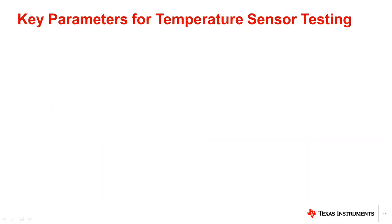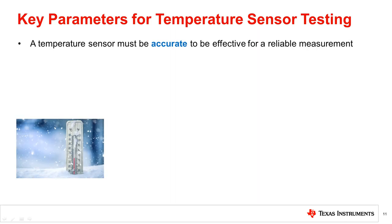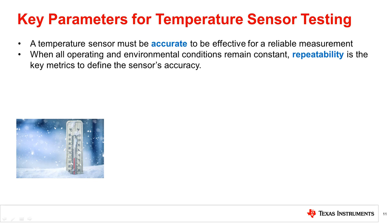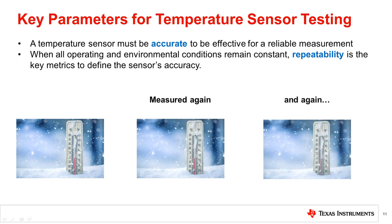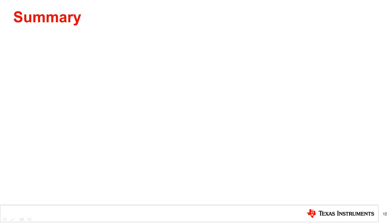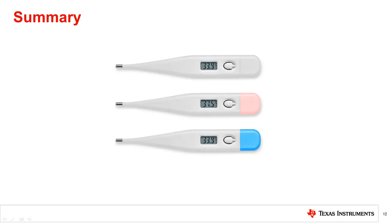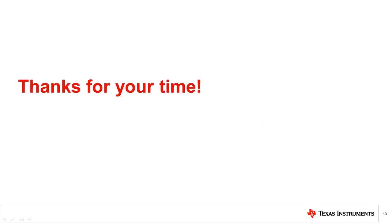To ensure a temperature sensor is best suited for the application, it is important to ensure that the sensor is accurate, and when tested under the same environmental and operating conditions, the output must remain as close as possible to the accurate value. In summary, this training video shows what accuracy and repeatability mean for a temperature sensor, how external parameters affect accuracy beyond the sensor's own specification, and why repeatability is important in making accurate measurements. Just because two thermometers read the same value does not make them accurate, and one thermometer reading the correct value does not make it precise. Thank you for your time.